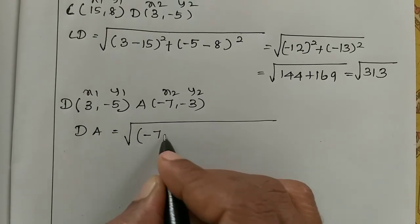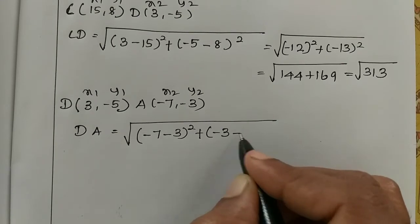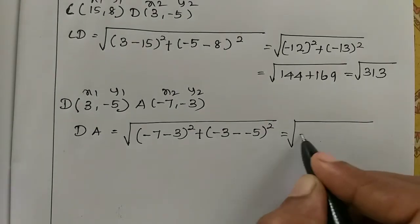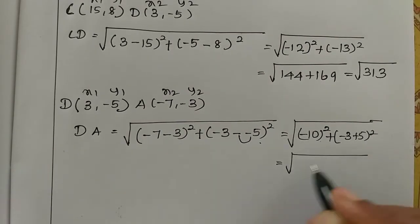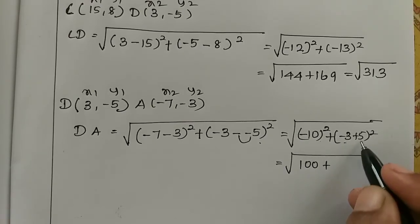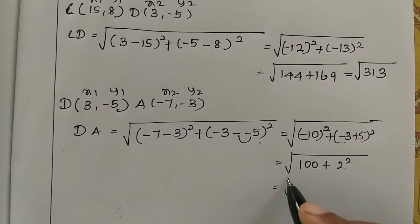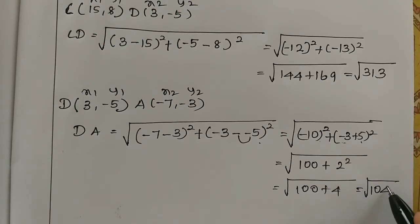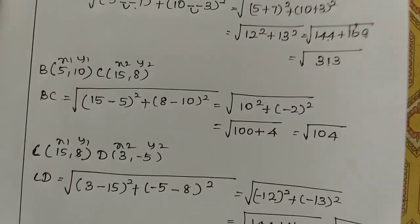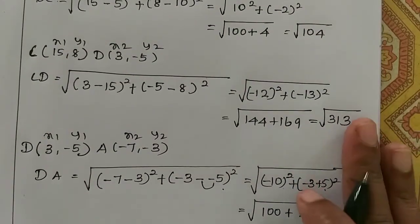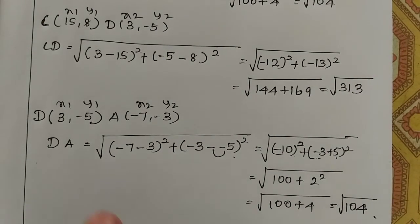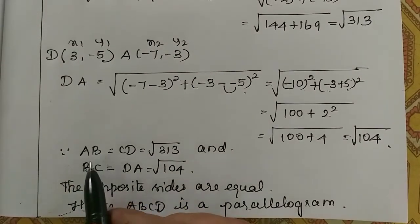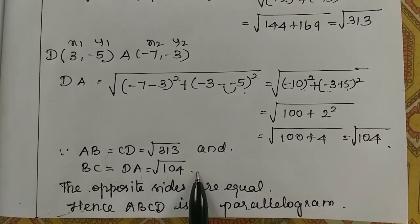DA: root of (x2 is minus 7 minus x1 is 3) whole square plus (y2 is minus 3 minus y1 is minus 5) whole square. Which gives 10 squared plus 2 squared, equal to 100 plus 4, equal to root of 104. So AB is root 313 and CD is root 313. BC is root 104 and DA is root 104. Opposite sides are equal. Therefore these points form a parallelogram. Since AB equals CD equals root 313 and BC equals DA equals root 104, hence ABCD is a parallelogram.